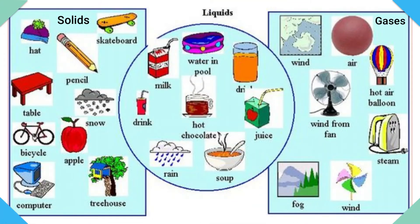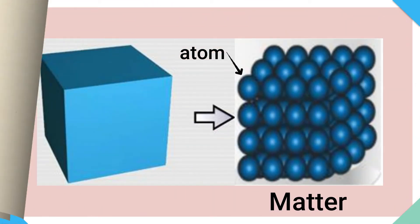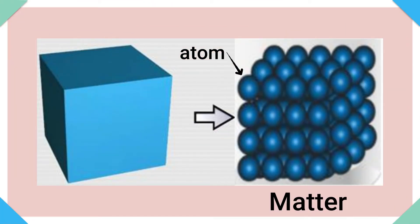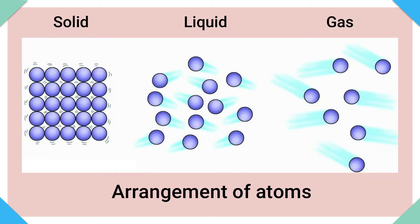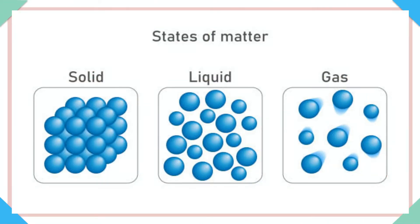Everything around us is made up of matter, from the air we breathe to the water we drink. All matter is made up of tiny particles called atoms. Matter takes different forms depending on how the atoms are arranged. We call these forms the states of matter.